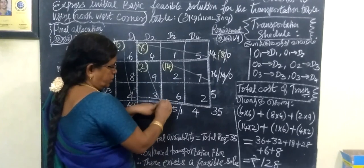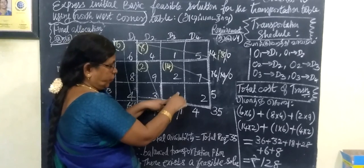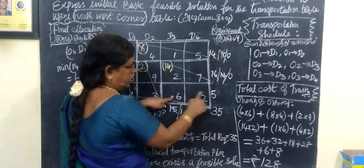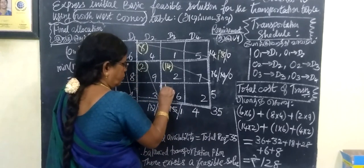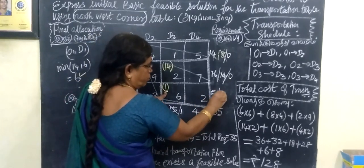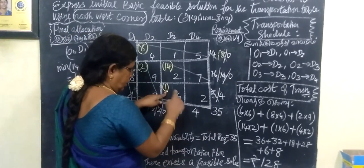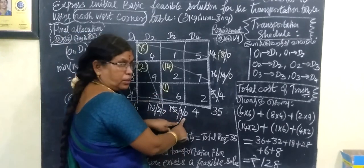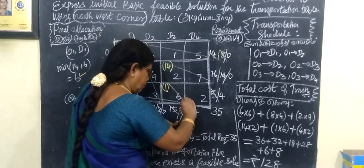The remaining values are 1 and 5. This is the Northwest corner. The row value is 1 and the column value is 5. The minimum is 1, so write 1 at the top corner. Subtract 1 from 5, so the balance is 4. Strike out this. Subtract 1 from 1, the remainder is 0. Strike out this. Since it is 0, the corresponding column value will be deleted. Strike out like this.